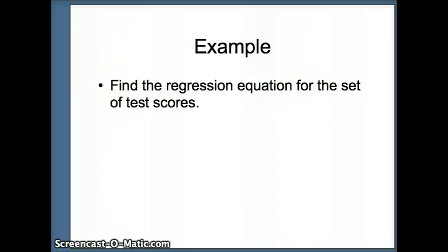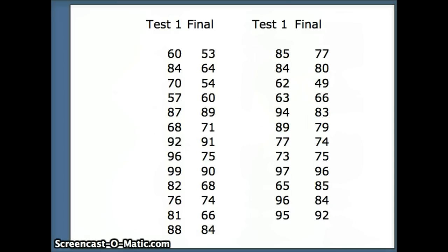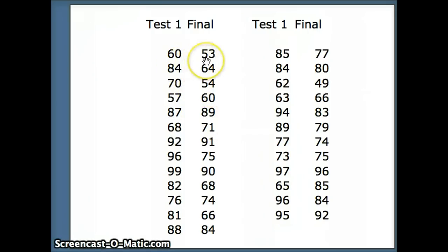We want to do an example: find the regression equation for a set of test scores and use it to predict the final exam score for a student who scores 75 on the first test. Here are the test scores. High scores — 97 on the first test are associated with high scores on the final, 96. Low scores on the first test, 60, are associated with low scores on the final, 53.